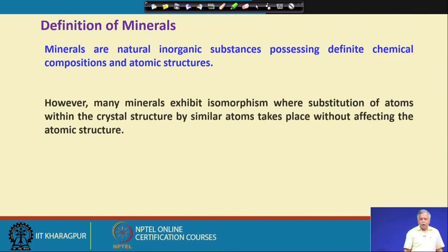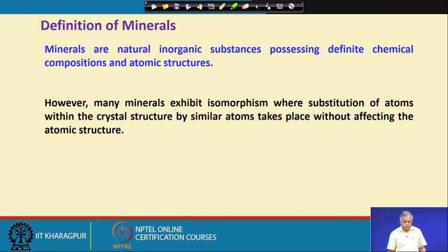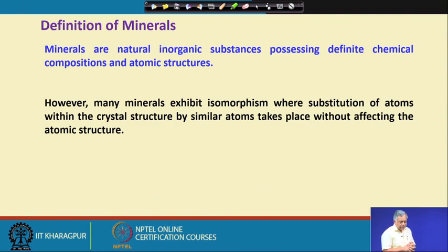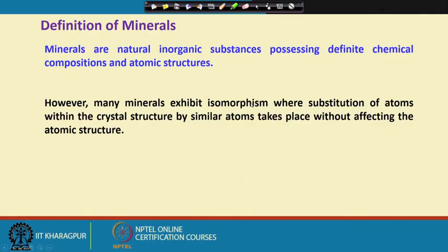Is it really always true? No, there are some exceptions. Like many minerals, they exhibit isomorphism. What does isomorphism mean? This means that substitution of atoms within the crystal structure by similar atoms takes place without affecting the atomic structure. It may look a little bit difficult to understand, but I will try to explain it with an example.